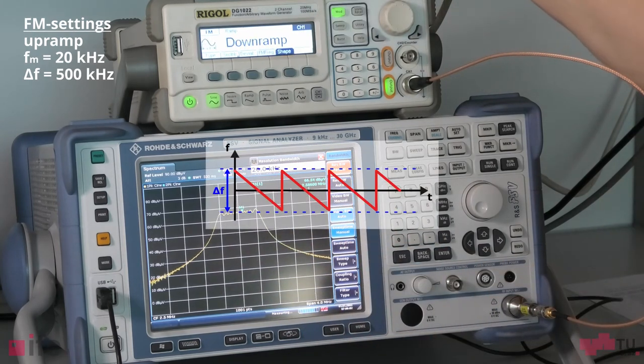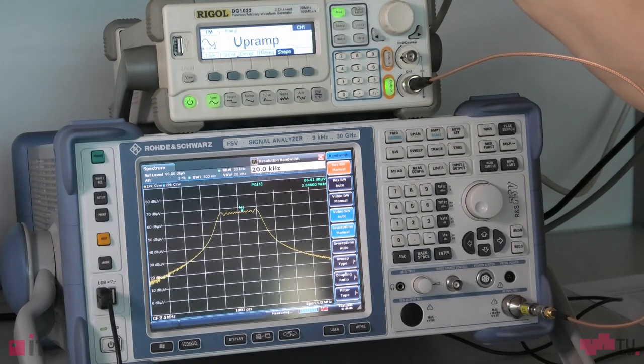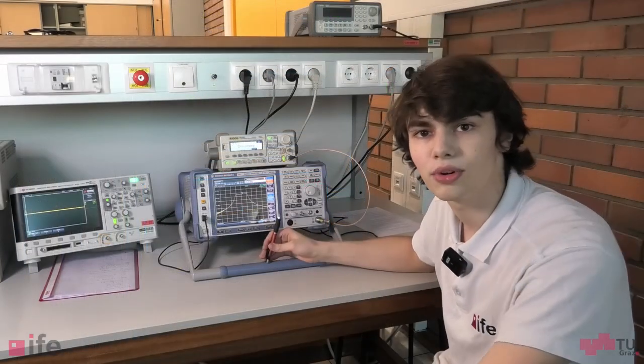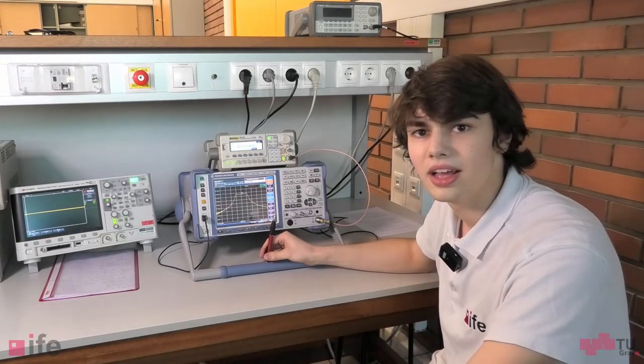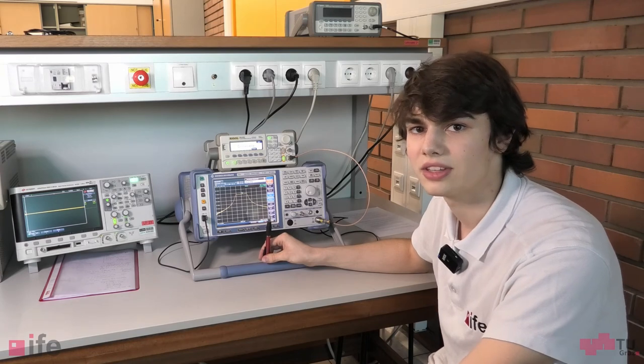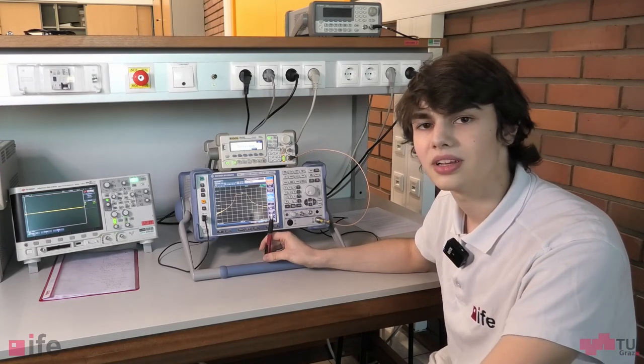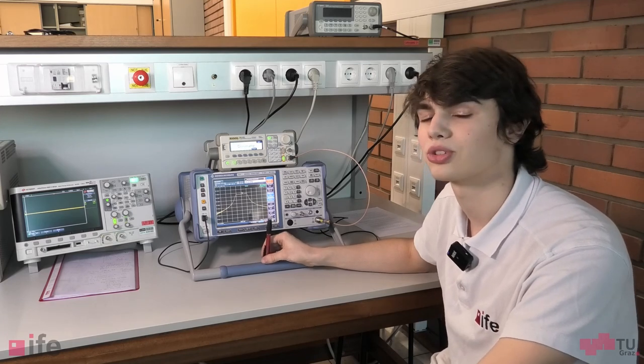And the down ramp. The down ramp really doesn't make any significant difference anymore. So that's it for the modulation waveforms, and in the next video we will show how the frequency deviation affects the spectrum and then we will give you a practical example on how to use spread spectrum modulation.